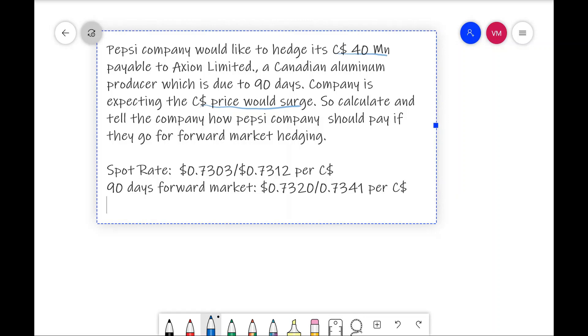They are given two quotes. First is spot market quote, that is 0.7303 slash 0.7312. 90 day forward market quote, that is 0.7320 slash 0.7341 dollar, that is per Canadian dollar.